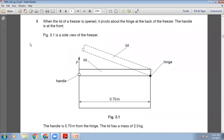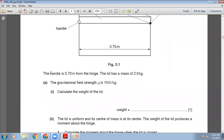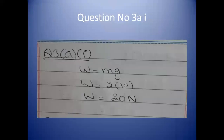Next question: when the lid of a freezer is opened, it pivots about the hinge at the back. The handle is at the front, 0.7 metres from the hinge. The lid has a mass of 2 kg. Gravitational field strength g is 10 N/kg. Calculate the weight of the lid: W = mg = 2 × 10 = 20 Newtons. The marking scheme confirms 20 Newtons.